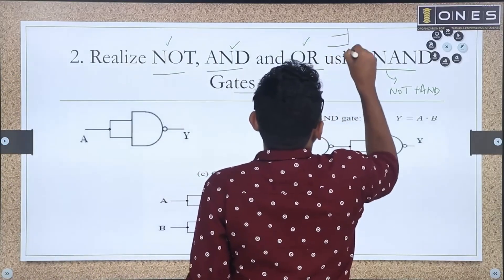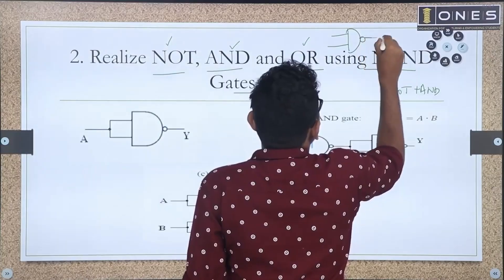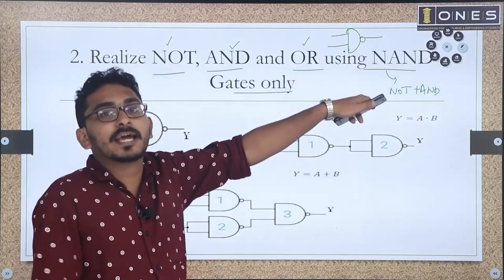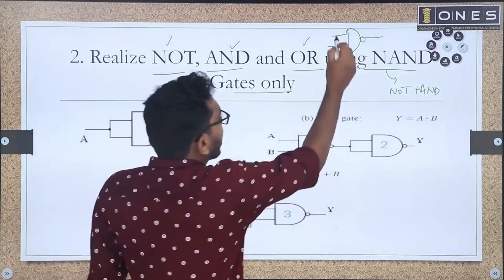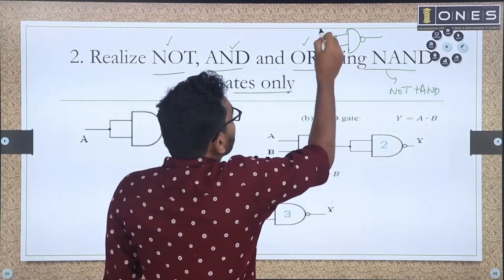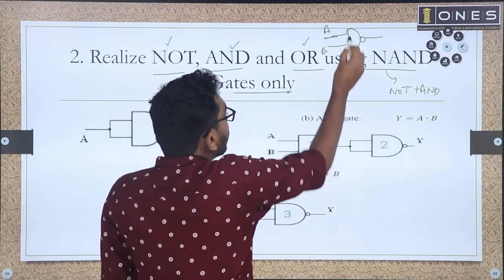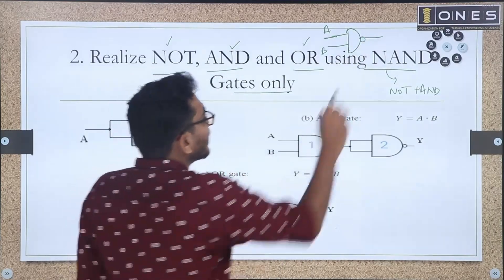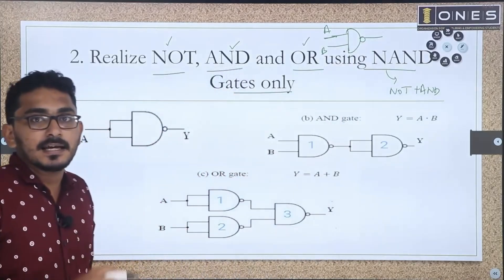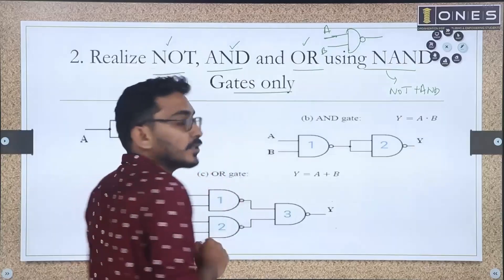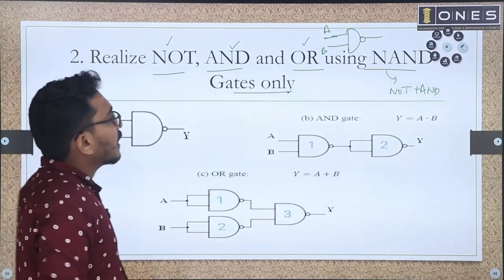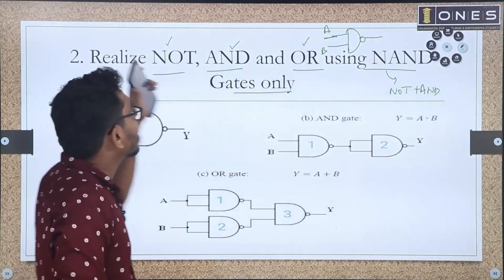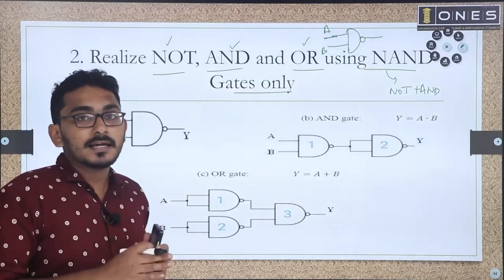For the NAND gate: it has a bubble at the output, which means complementing. To realize a NOT gate using NAND, we connect both inputs of the NAND gate to the same input A. So NAND with inputs A and A gives us A AND A, which equals A. Then the NAND complements it, giving A-bar — the NOT gate.